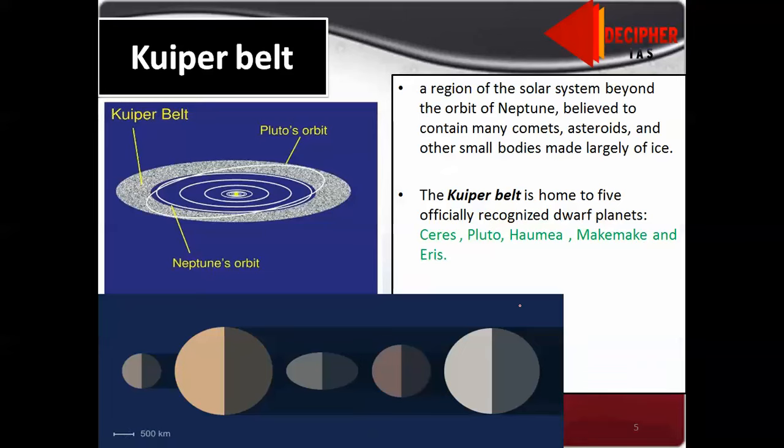What do you mean by Kuiper belt? Kuiper belt is a region of solar system beyond the orbit of Neptune, believed to contain many comets, asteroids and many small bodies. Kuiper belt has five officially recognized dwarf planets: Ceres, Pluto, Haumea, Makemake and Eris. Pluto till very recently was part of the ninth planet of our solar system.